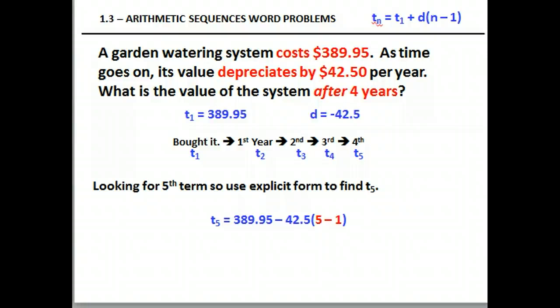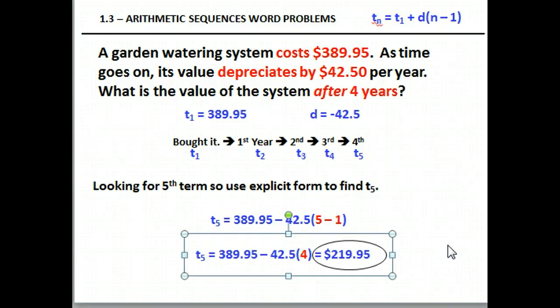Your answer should be, after you do all of the math, $219.95 if you did all the steps in the right order. Don't forget the order of operations. You have to multiply before you subtract.